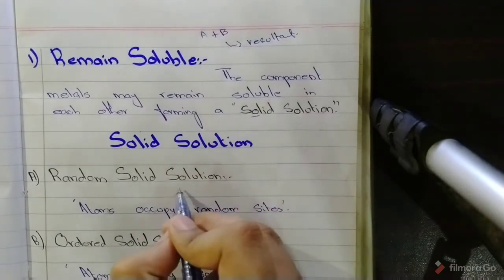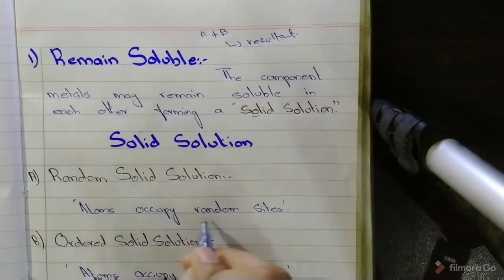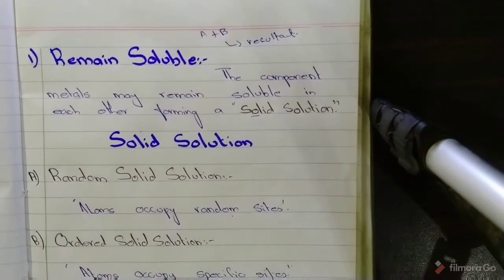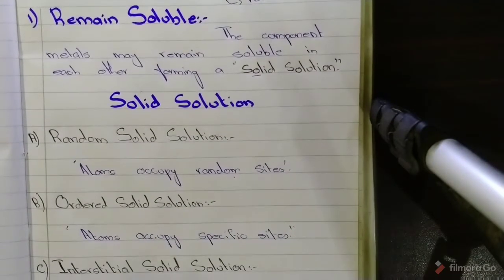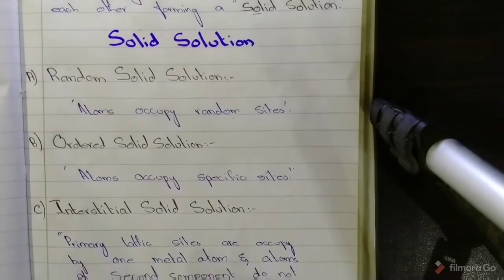Now this solid solution can have three forms. Number one is random solid solution, in which atoms occupy random sites in the crystal lattice. Secondly, there is ordered solid solution, in which atoms occupy specific sites in the crystal lattice. And thirdly, interstitial solid solution.